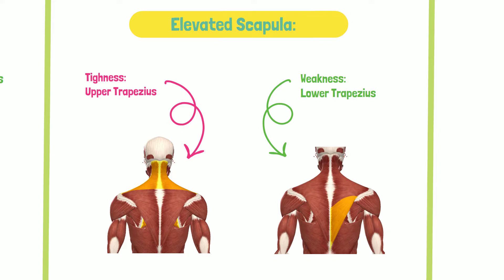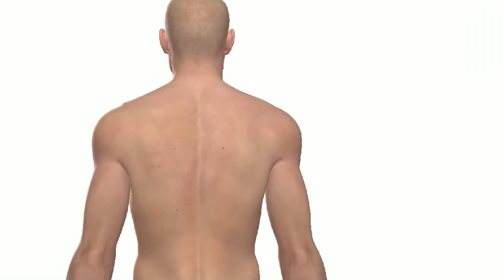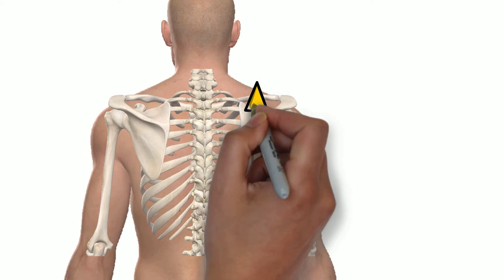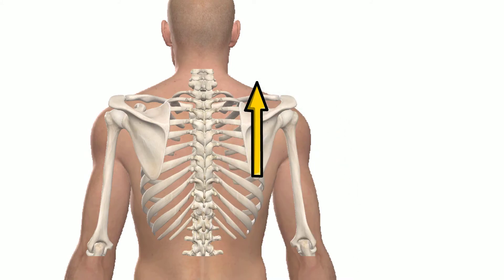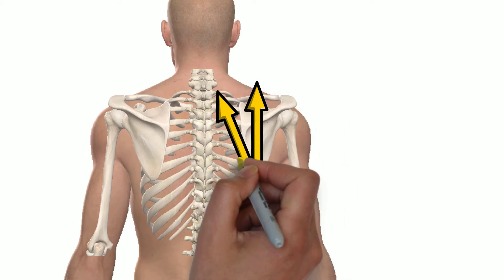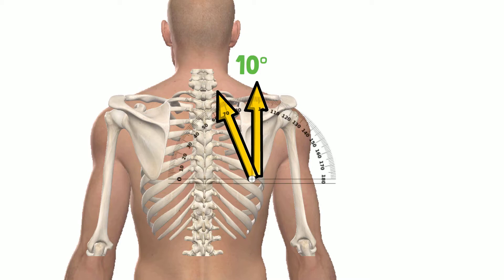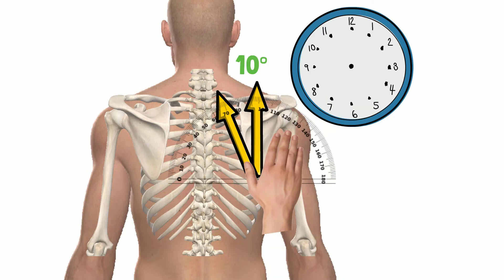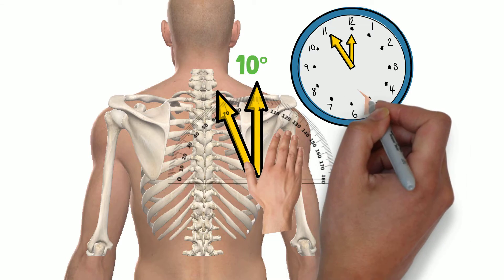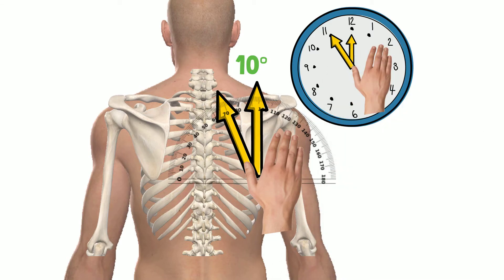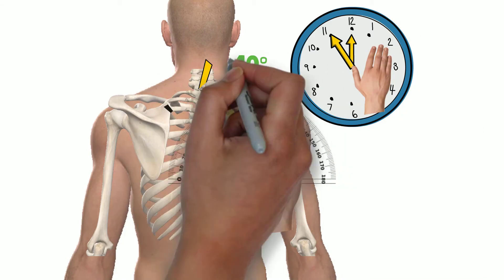The third position is upward and downward rotation. The scapula is typically upwardly rotated 10 degrees. To examine this, place the palm of your hand on the inferior angle of the scapula. The thumb should be pointing through an oblique vector resulting in a 10-degree counterclockwise inclination towards 11 o'clock. Don't forget to compare it to the contralateral side.